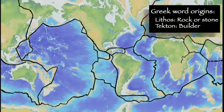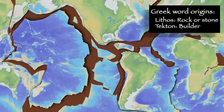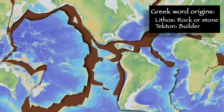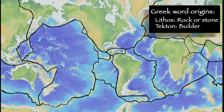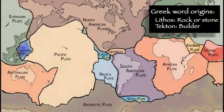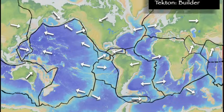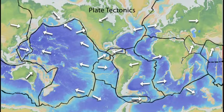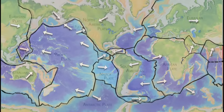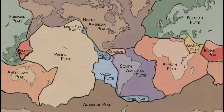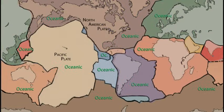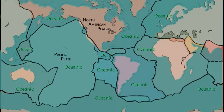The cool, rigid outer layer of the Earth, the lithosphere, is broken into massive plates. There are about a dozen major plates and many smaller plates in continuous motion as they collide with, slide under, or move past each other in a process known as plate tectonics. A plate may be entirely oceanic lithosphere,